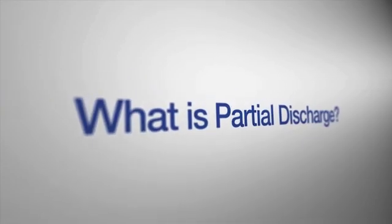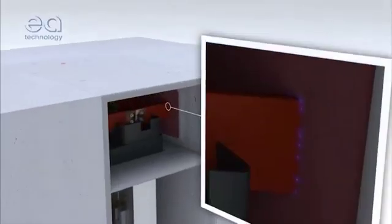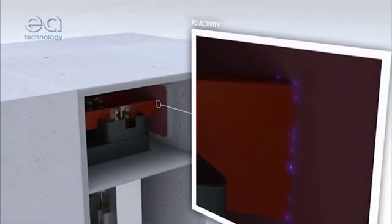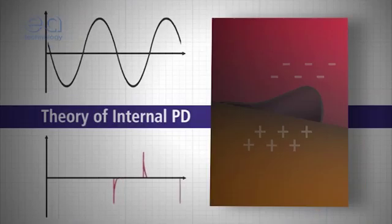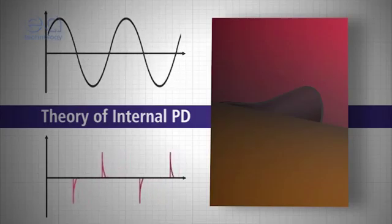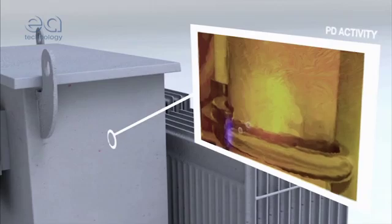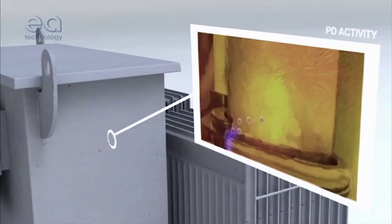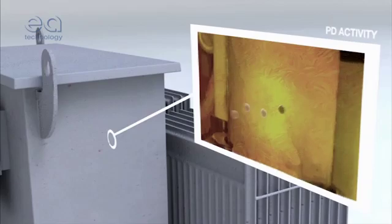A partial discharge is an electrical discharge or spark that bridges a small portion of the insulation between two conducting electrodes. We call this PD activity, and it can occur at any point in the insulation system where the electric field strength is greater than the breakdown strength of the insulating material.